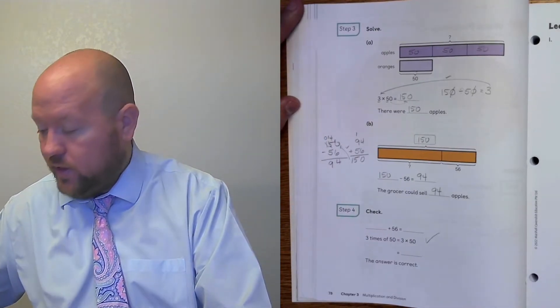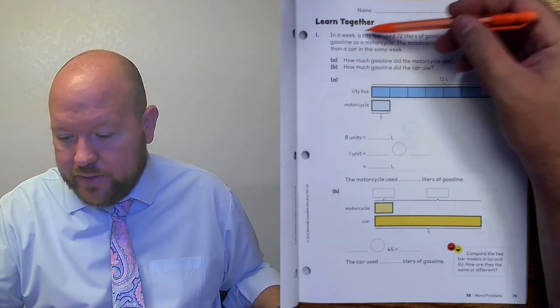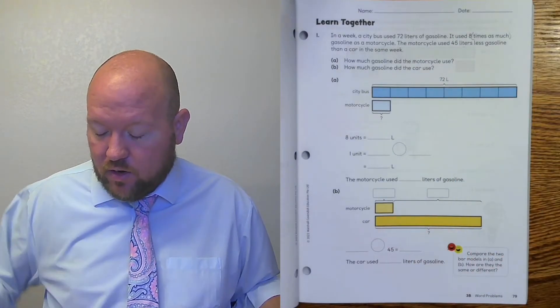Let's look at the Learn Together on the next page, page 79. In a week, a city bus used 72 liters of gasoline — there's our 72, already labeled for us. It used eight times as much — there's our comparison language, so we're using a comparison bar model. And it used eight times as much gasoline as a motorcycle, so a motorcycle used a lot less. The motorcycle used 45 liters less gasoline than a car in the same week. So how much gasoline did the motorcycle use? That's the question mark for letter A. How much gasoline did the car use? That will be letter B. So it's asking two questions, so we have two question marks.